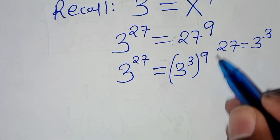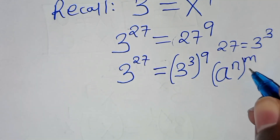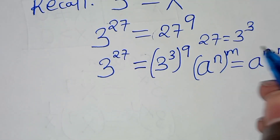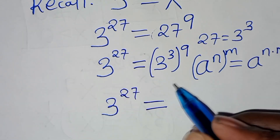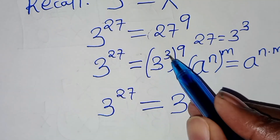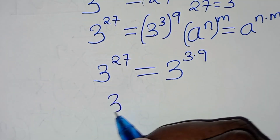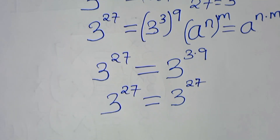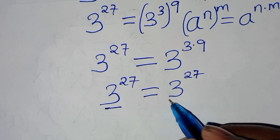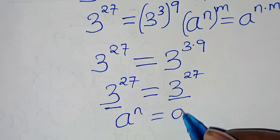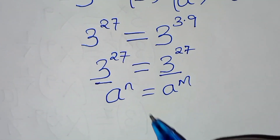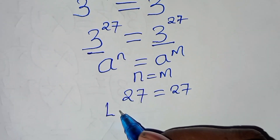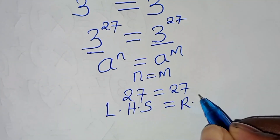We have 3 to the power of 3 raised to power 9. This is in the form of a to the power of n raised to power m, which equals a to the power of n times m. Applying this exponent property, we get 3 raised to power 27 equal to 3 raised to power 3 times 9, which equals 3 raised to power 27. Since the bases are the same, and a to the power of n equals a to the power of m implies n equals m, we get 27 equals 27, confirming the left hand side equals the right hand side.